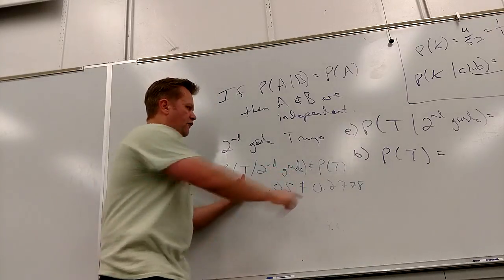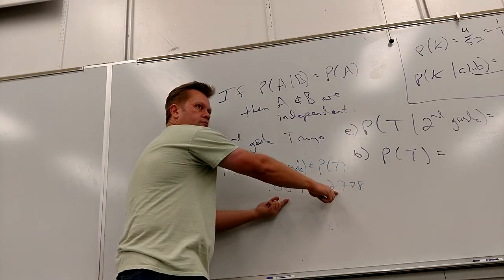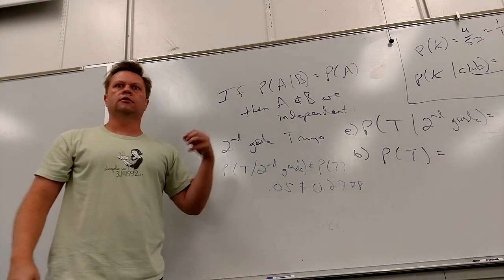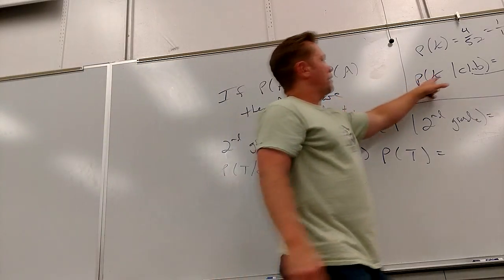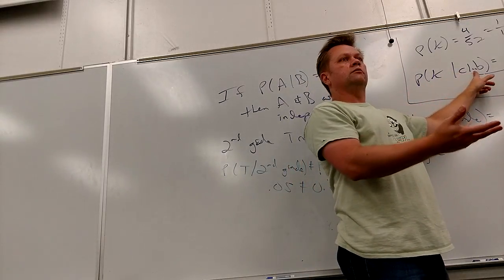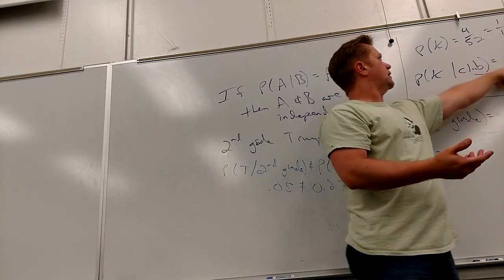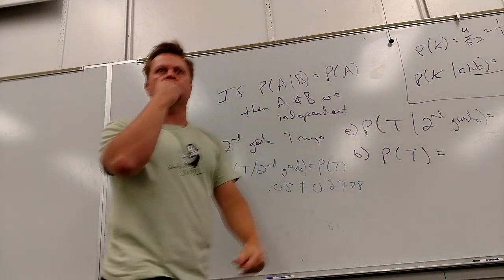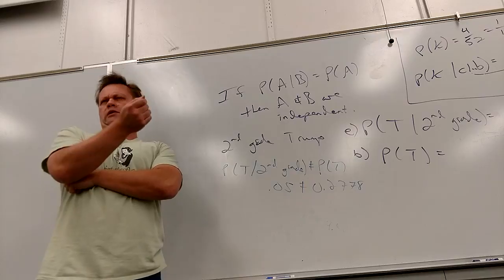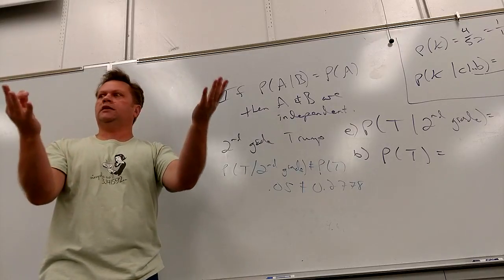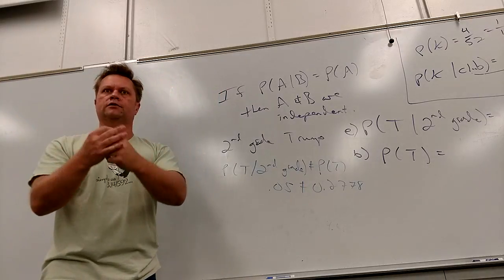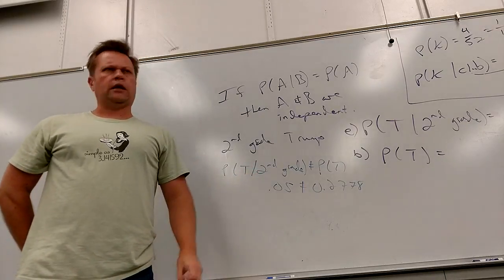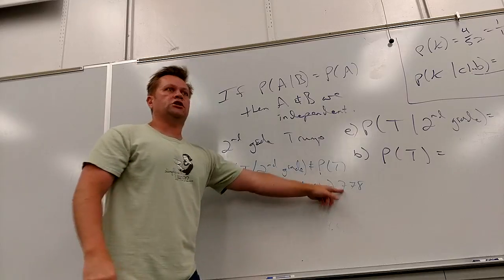Here, knowing one affected the other one — that's dependent. Does the probability of a king depend on if it's a club? No, it stays the same, it doesn't depend on knowing it's a club or not. But if some kid said Trump and you ask 'were they in the second grade?' — that changes the answer. That changes the likelihood of that.